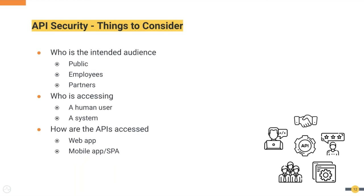Next, how are these APIs accessed? We should consider who has control of the environment in which the APIs are accessed. It could be a web application, where the end user does not have complete control over the environment — in that scenario we have the option to securely store the application keys. There can also be mobile applications or single page applications where the end user has total control over the execution environment. We should ideally consider these as untrusted clients and should not embed API keys into the applications themselves.